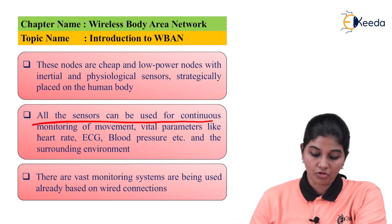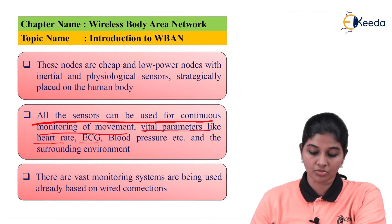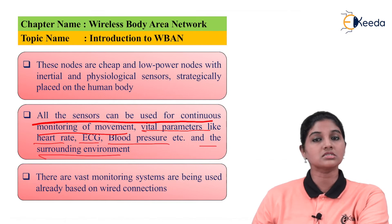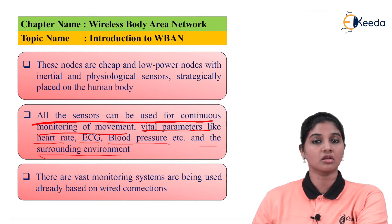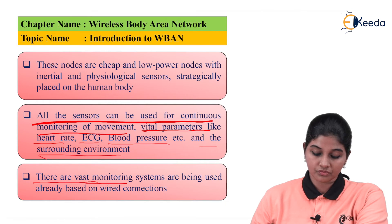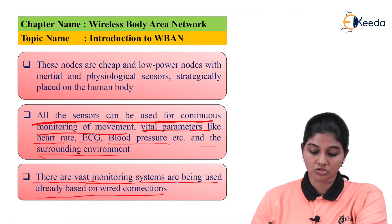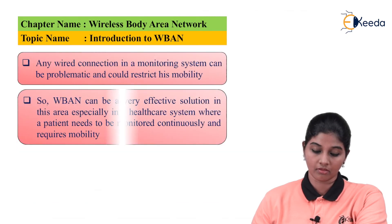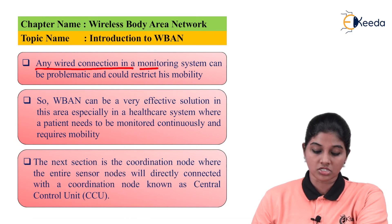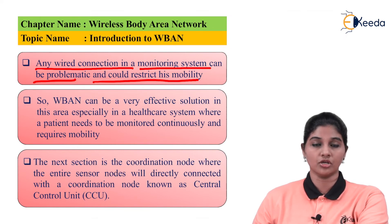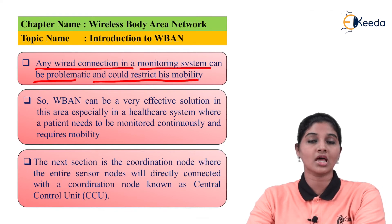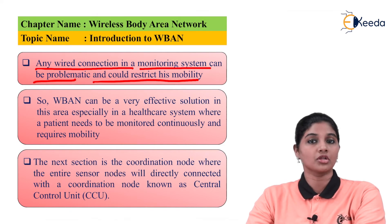All the sensors can be used for continuous monitoring of movement, vital parameters like heart rate, ECG, blood pressure, and the surrounding environment. Vast monitoring systems based on wired connection already exist, but any wired connection in a monitoring system can be problematic and could restrict the mobility of the user. If sensors transmit information via wired connectivity, that definitely restricts the person's movement. To avoid that, the wireless body area network comes into the picture.